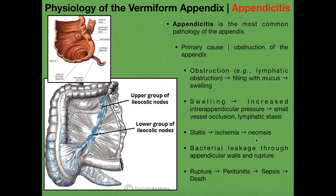So the appendix undergoes necrosis. Whenever the appendix starts to necrose, this can trigger bacteria to leak through the walls of the appendix and cause the appendix to rupture. When an appendix ruptures, that's extremely dangerous because it can cause inflammation in the peritoneal cavity called peritonitis — you get a bunch of bacteria leaking into that area, which produces sepsis and can kill you. An appendicitis, if not taken care of very quickly, can lead to death if the appendix ruptures.